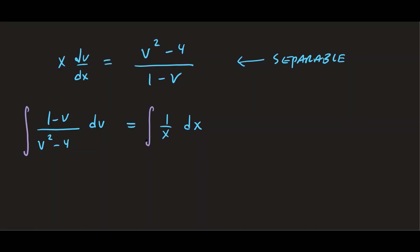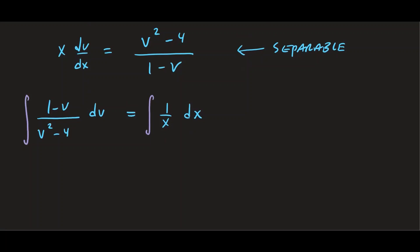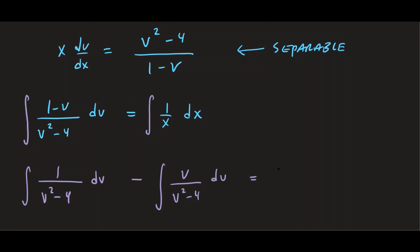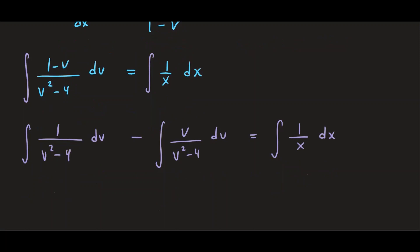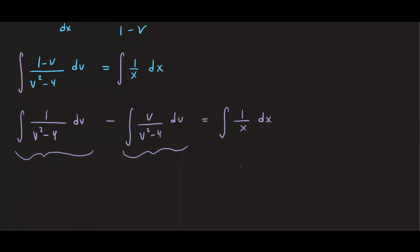On the left-hand side we need a little more work, so we separate the fraction. We have the integral of 1 over v squared minus 4 dv, minus the integral of v over v squared minus 4 dv, equal to the integral of 1 over x dx. The first integral requires partial fractions, the second can be done by u-substitution, and the right-hand side gives ln of x.